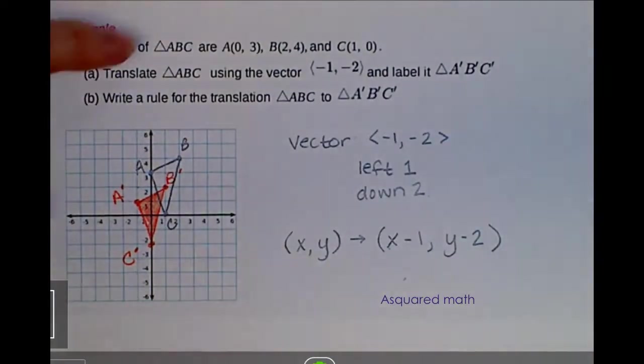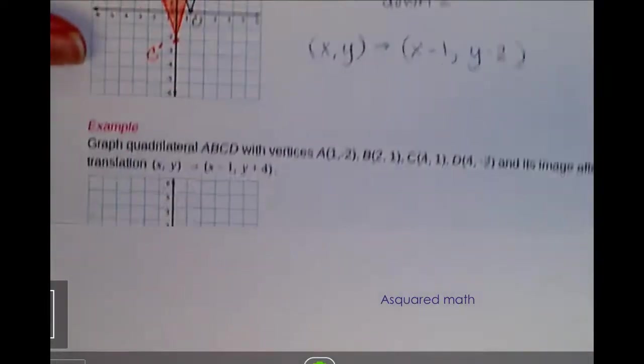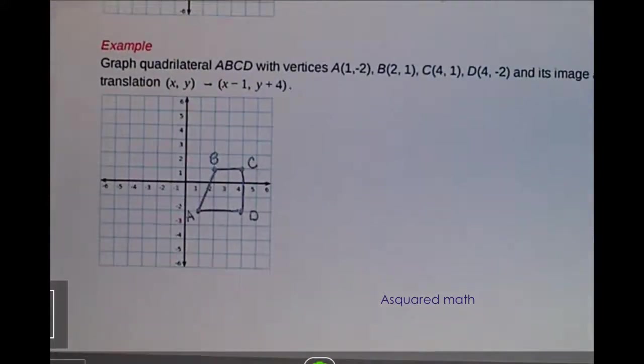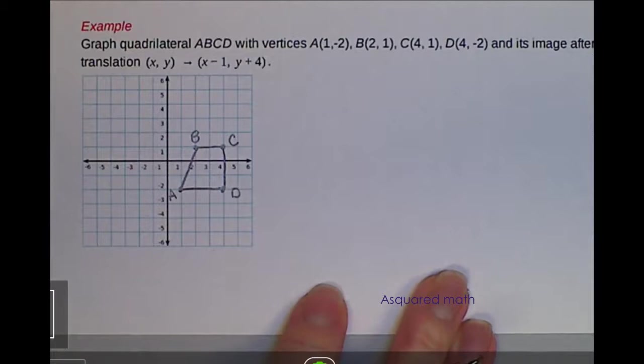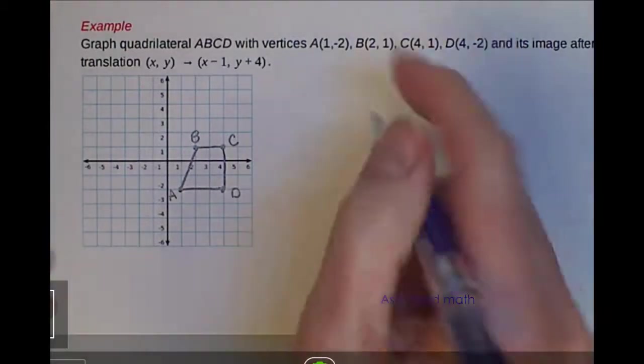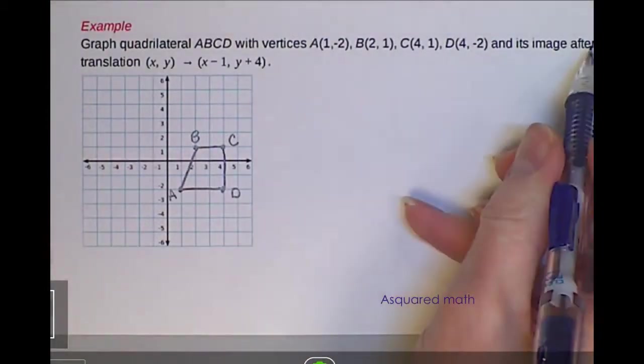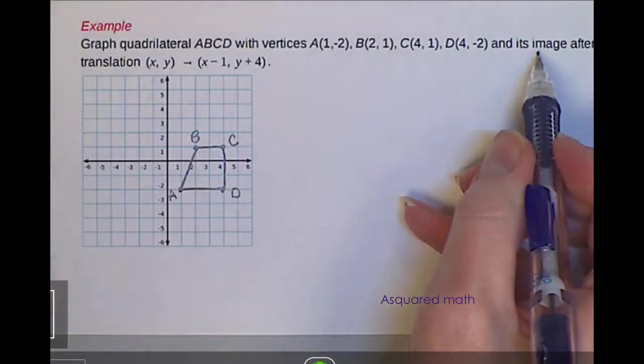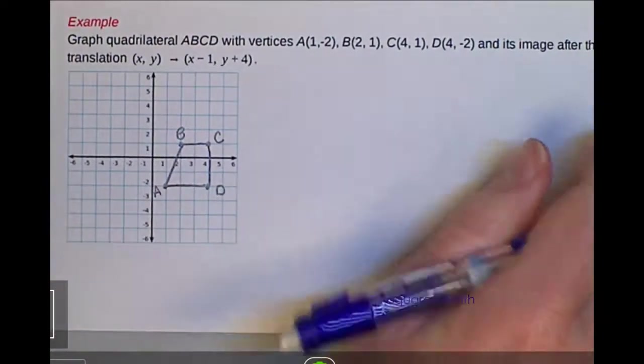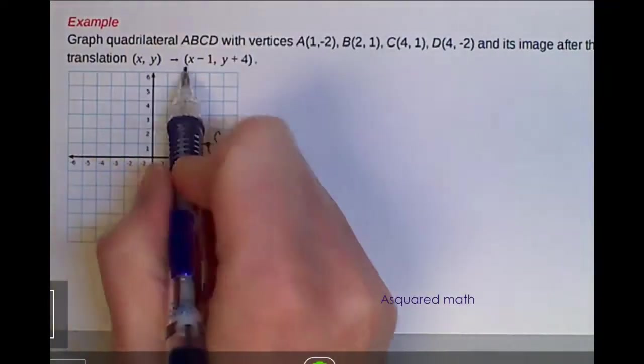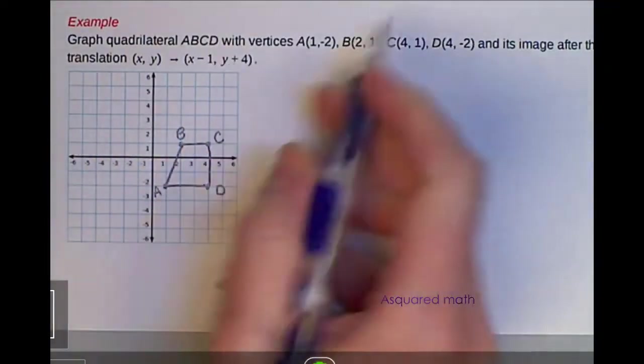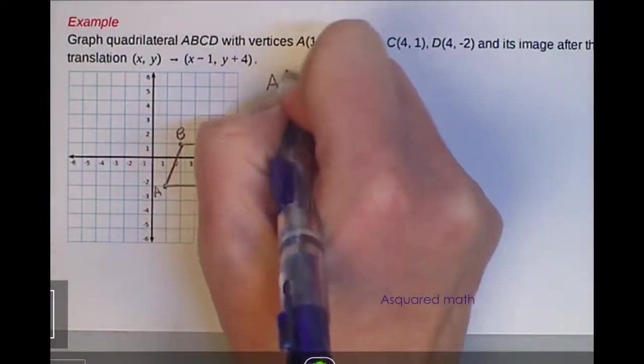The next example walks us through that. So let's take a look at that. For this one, we have a quadrilateral ABCD and we're given the vertices and we want to make the image after it follows this translation. So we're given (x,y) yields (x-1, y+4). I'm going to write out all of my points.